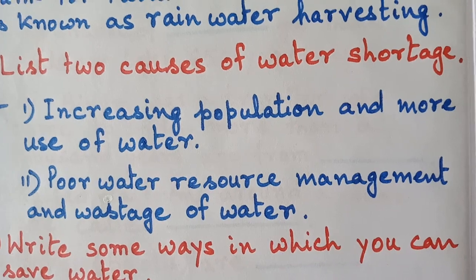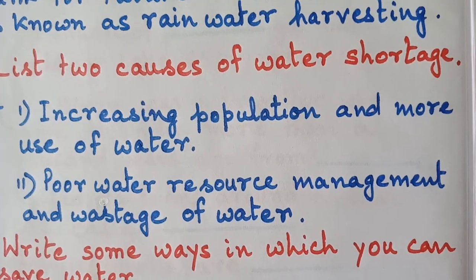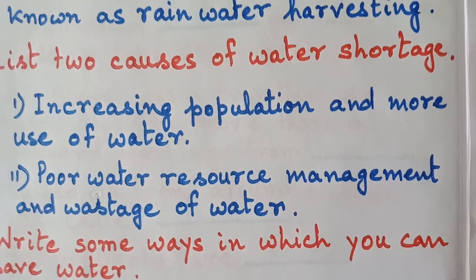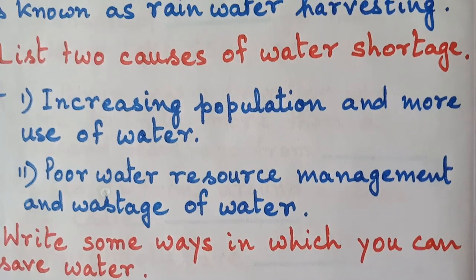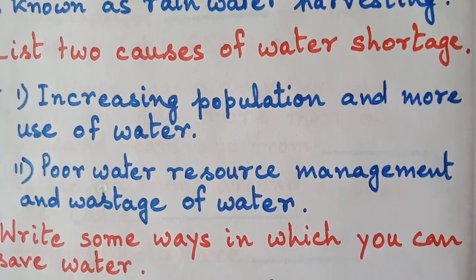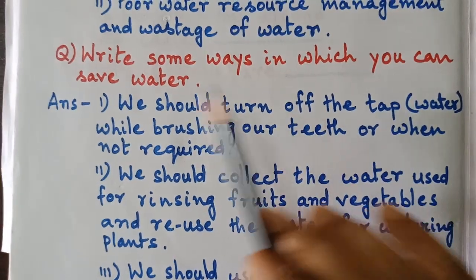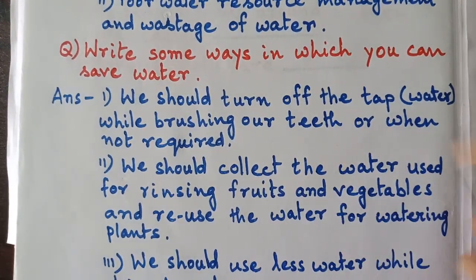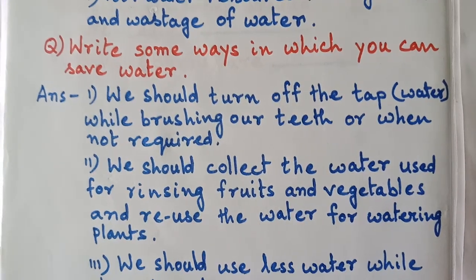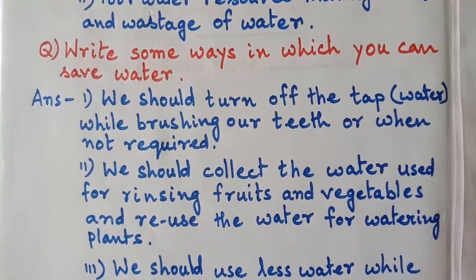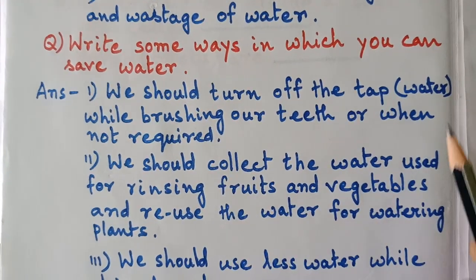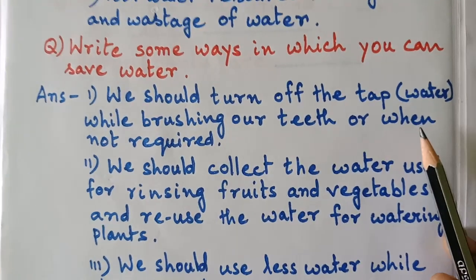We are also wasting water, and that's why there is a shortage of water. Throughout the chapter we have seen that water is very precious and we should not waste it. We should save water. Now I will tell you some of the ways how we can save water.